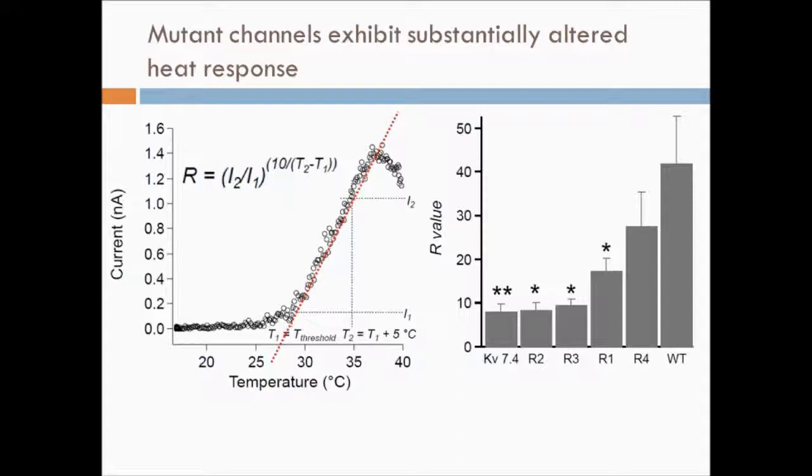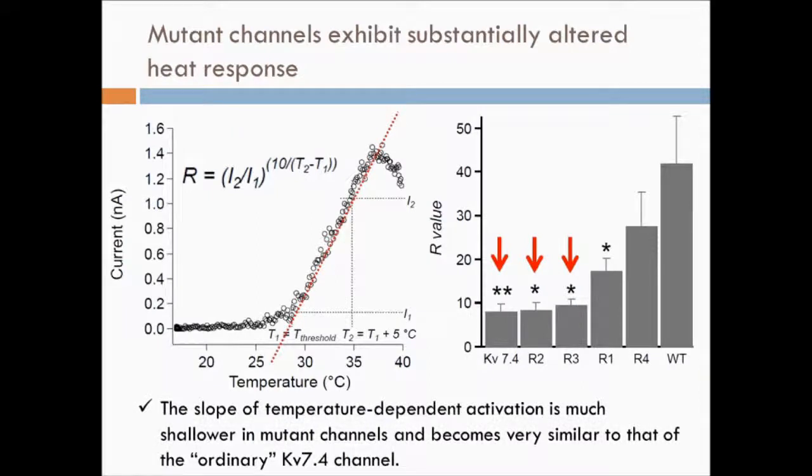indicating that they are less temperature-sensitive. The R-value for a couple of mutant channels were found to be so low that they are indistinguishable from the R-value of the KV7.4 channel that was chosen as an example of the ordinary ion channel without high temperature sensitivity. All of these observations demonstrate that the turret mutant channels have a largely altered heat response.